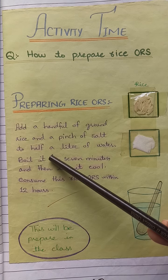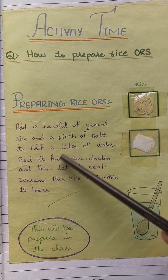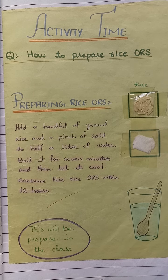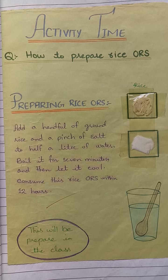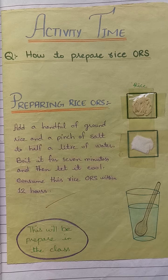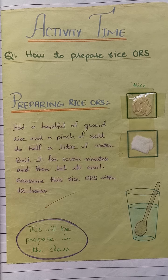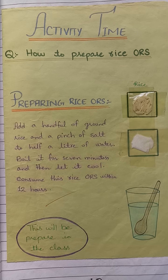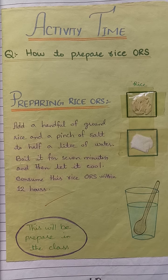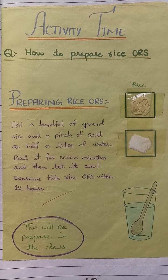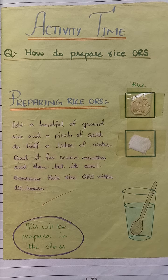To prepare rice ORS: add a handful of ground rice and a pinch of salt to half a liter of water. Boil it for 7 minutes, then let it cool. Let it boil for 12 hours. After 12 hours, your rice ORS will be prepared. We will perform this activity in our class.